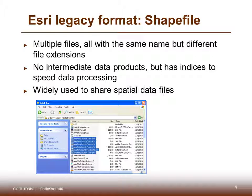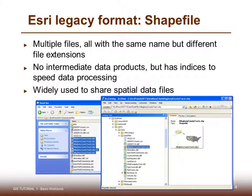Other file types you'll find include information about the database — the DBF database file — and information that has to do with the projection and the way the image is drawn on the screen. Here's an example of how a shapefile will appear in the catalog tree. You can preview it and show its contents and description in the catalog tree. It will have a .shp extension.